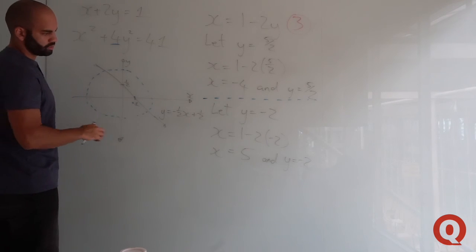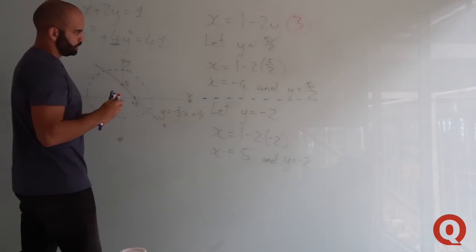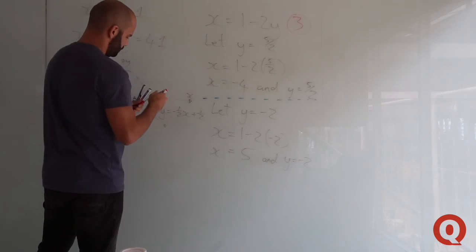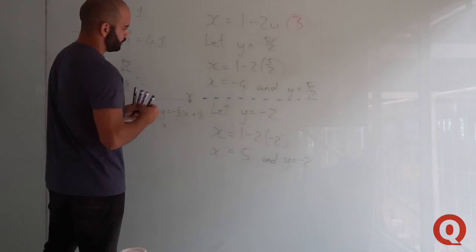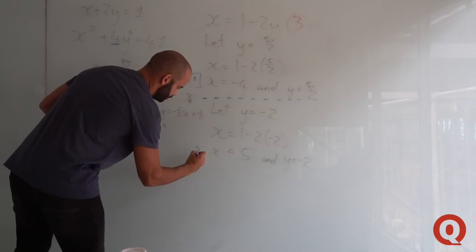And the two intersection points that you found here would be, say for example, let's use a different color, solution 1 and solution 2.